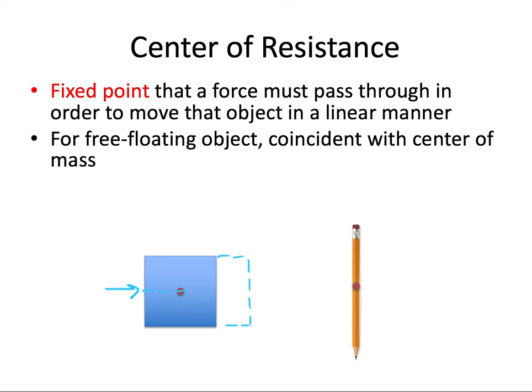However, if we were to push on that square down here, the square will still move to the right, but it will also spin around as it does so, because that force isn't being applied through the center of resistance. You can try this out for yourself with a pencil. Put the pencil down on a flat surface and try to push it through its center of resistance. If you find the right spot, the pencil will move straight across the table without rotating. But if you press the pencil at either end, you'll see how it starts to spin — that is the center of resistance at work.